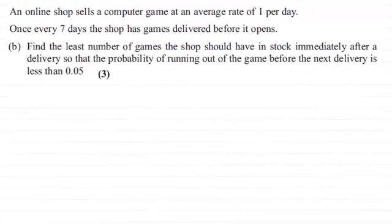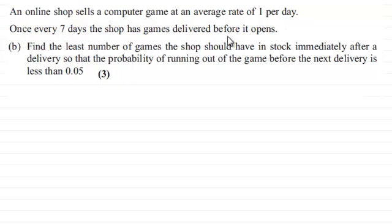Now for this next part of the question, remember we were told that an online shop sells a computer game at an average rate of one per day. Once every seven days the shop has games delivered before it opens. We've got to find the least number of games the shop should have in stock immediately after delivery so that the probability of running out of the game before the next delivery is less than 0.05, for three marks.